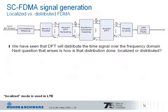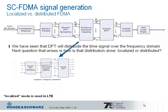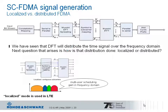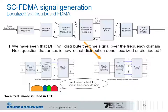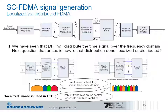The question is how subcarrier mapping is realized in the uplink. There are two possibilities, each with one advantage. First, localized mapping: in localized mode, the modulation symbols are assigned to adjacent subcarriers, giving the advantage of multi-user scheduling gain in the frequency domain. For localized subcarrier mapping, single carrier FDMA is named localized FDMA. The other mode is distributed subcarrier mapping, referred to as interleaved FDMA. In this mode, the modulation symbols are equally spaced over the entire bandwidth. The advantage of this mode is robust transmission of control channels and support of high terminal mobility.